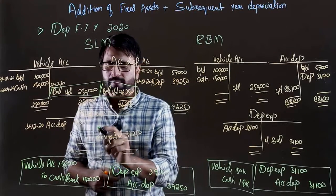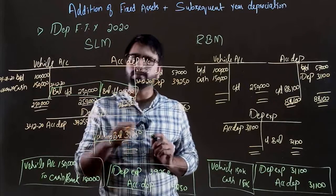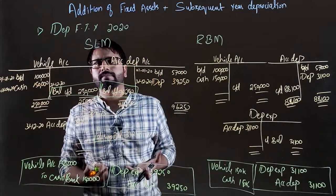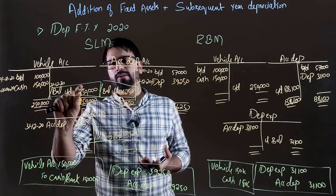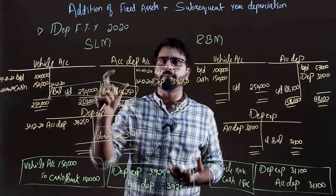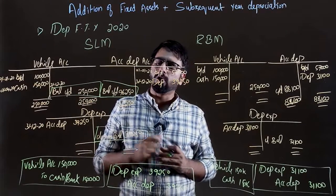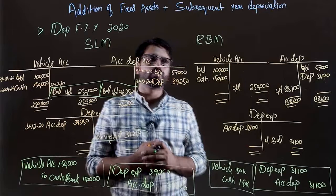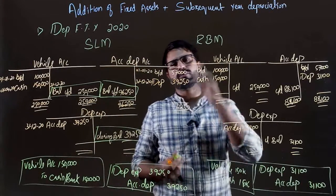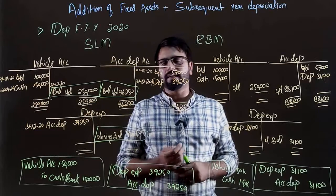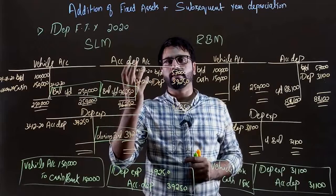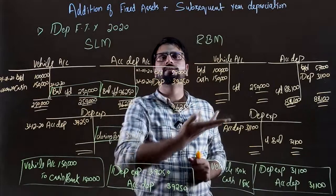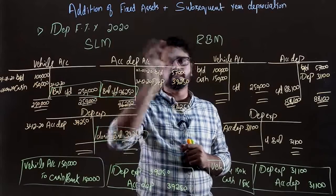Debit balance and credit — because it is written on the credit side. These three balances will go in the trial balance. If you have asked to make the extract of financial statements, then we will put in the balance sheet in the non-current assets, 250,000. It is called extract of financial statements. So extract means you have to calculate the depreciation, after that make the journal entries, after the journal entries make ledgers, after the trial balance we can make the direct financial statements.